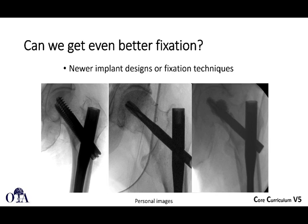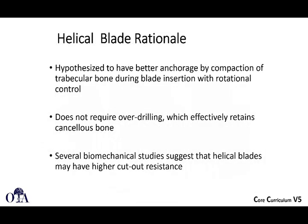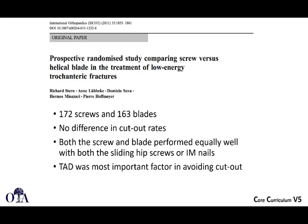What's the rationale behind the helical blade? It's thought to have better anchorage by compaction of trabecular bone during blade insertion, which helps with rotational control. It doesn't require over-drilling, so it effectively retains cancellous bone. There are also some biomechanical studies suggesting helical blades may have higher cutout resistance.